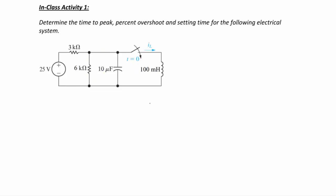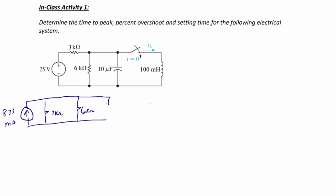To simplify, we perform a source transformation: converting the 25 V source in series with the 3 kΩ resistor into a current source of 25/3k = 8.33 mA in parallel with the 3 kΩ resistor. This places the 3 kΩ, 6 kΩ, 10 μF capacitor, and 100 mH inductor all in parallel — a single node-pair circuit we can solve with KCL.